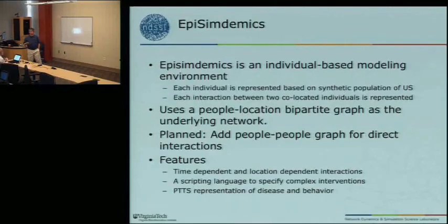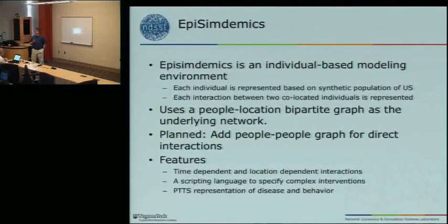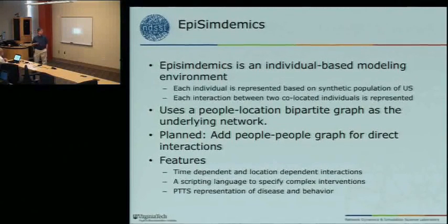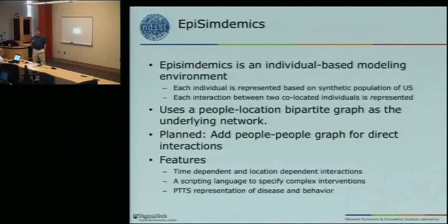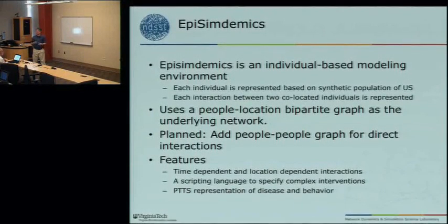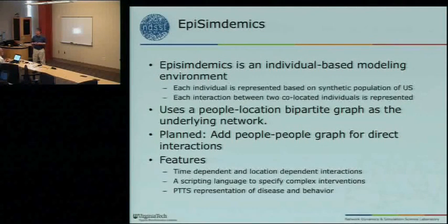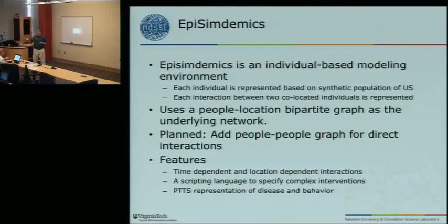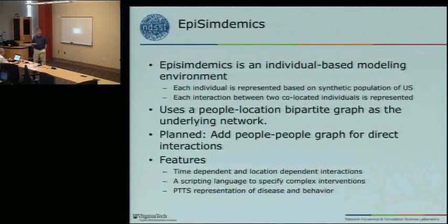The bipartite graph is input to the simulation. You have nodes which are people and locations, and there's an edge between them if a person visits a particular location. The edge is labeled with the time of the visit. A feature we plan to add is an additional people-people graph for interactions that don't happen at a location, such as if a person calls another person on a phone. This way we can model both time-dependent and location-dependent interactions.